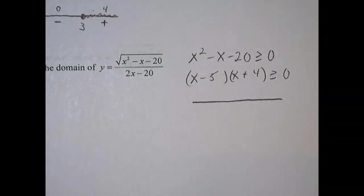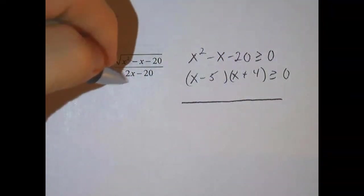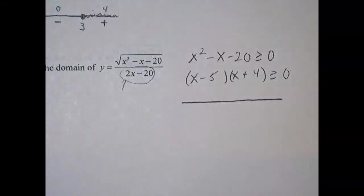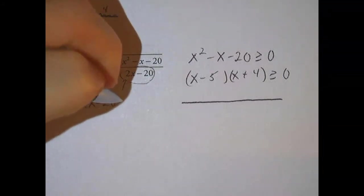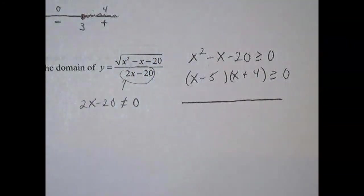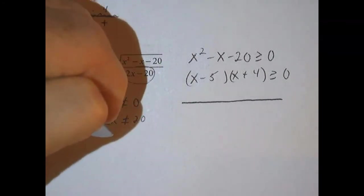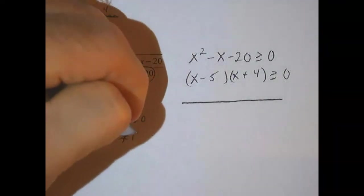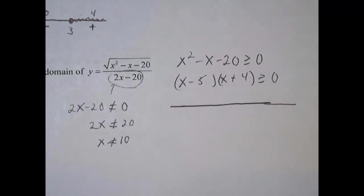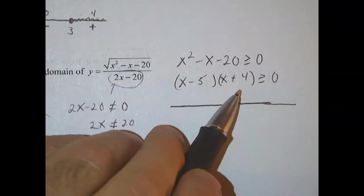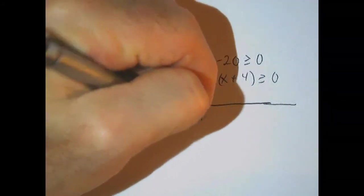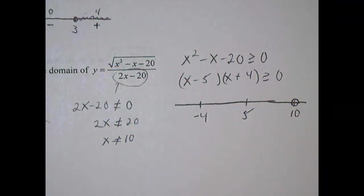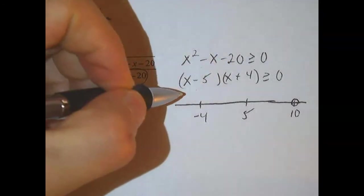And so this means we're going to look at critical points here. And we actually have another critical point to add on because we also know from the denominator, we know that 2x - 20 cannot be 0. In other words, 2x cannot be 20. In other words, x cannot be 20 ÷ 2 which is 10. So we've got three numbers to put in our number line this time. We've got a 5 that would make this 0. We've got a -4 that would make this one 0. So a -4, 5, and we've got a 10.